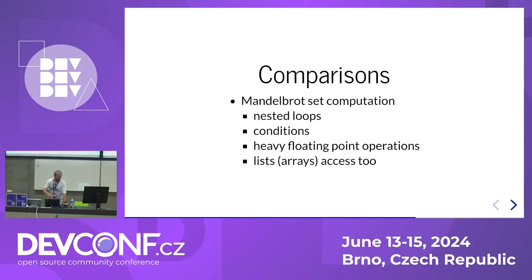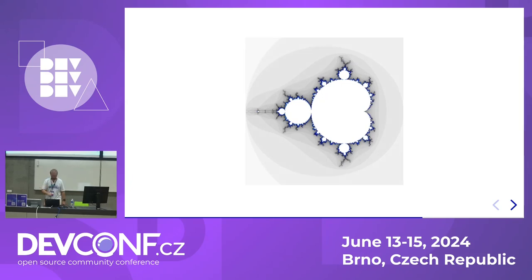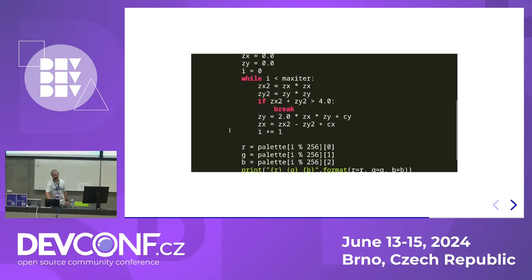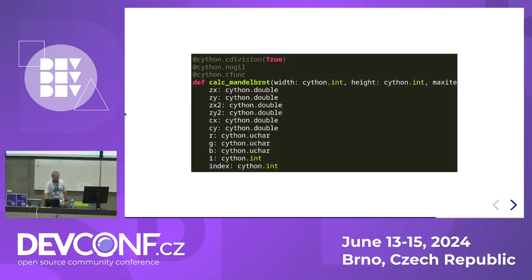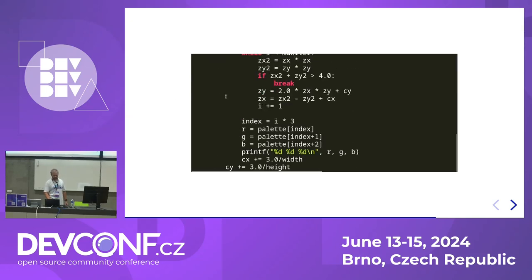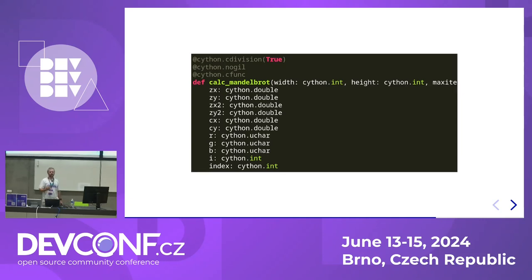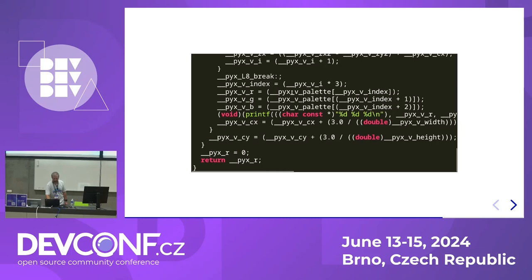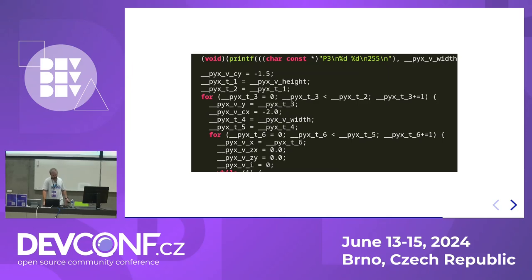Let's do some comparison. I created an artificial benchmark based on nested loops, conditions, and heavy floating-point operations — it computes the Mandelbrot set. This is the code we'll be benchmarking: three nested loops with computations happening inside. We can also update the code for Cython, which is a bit larger because we need to specify types for all local variables as well, not just parameters. In the end it's compiled into something unreadable but optimized.